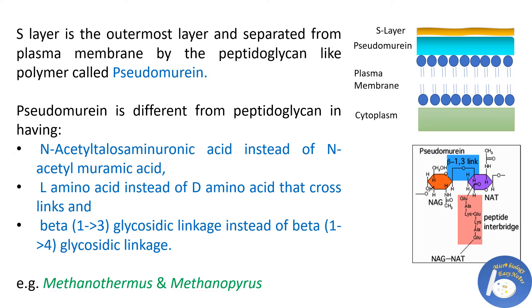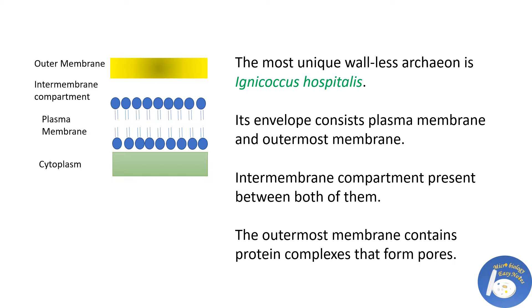Examples of pseudomurein-containing archaebacteria are Methanothermus and Methanopyrus. The most unique wall-less archaeon is Ignicoccus hospitalis. Its envelope consists of a plasma membrane and an outermost membrane with an intermembrane compartment between them. The outermost membrane contains protein complexes that form pores.